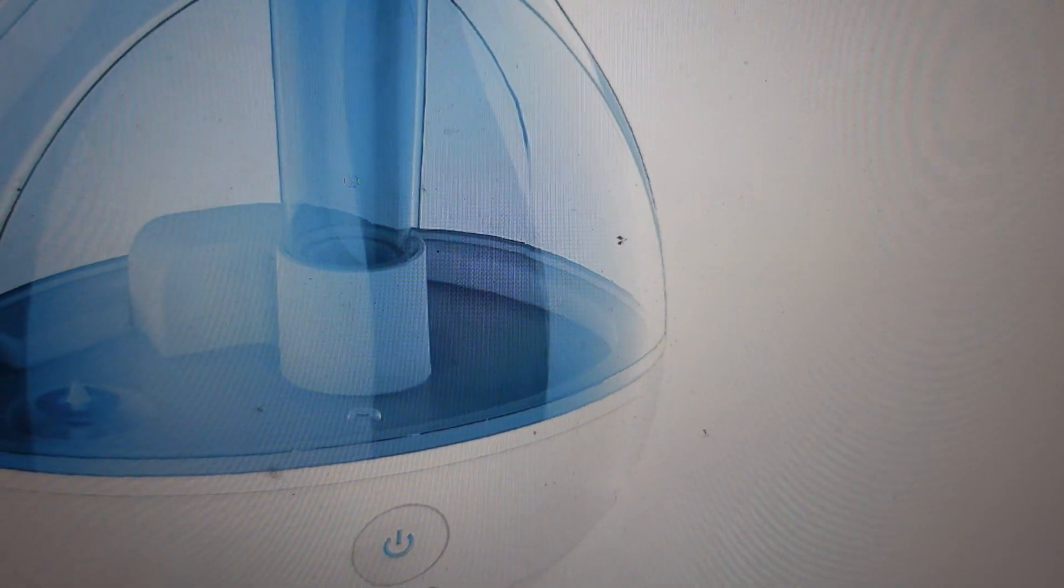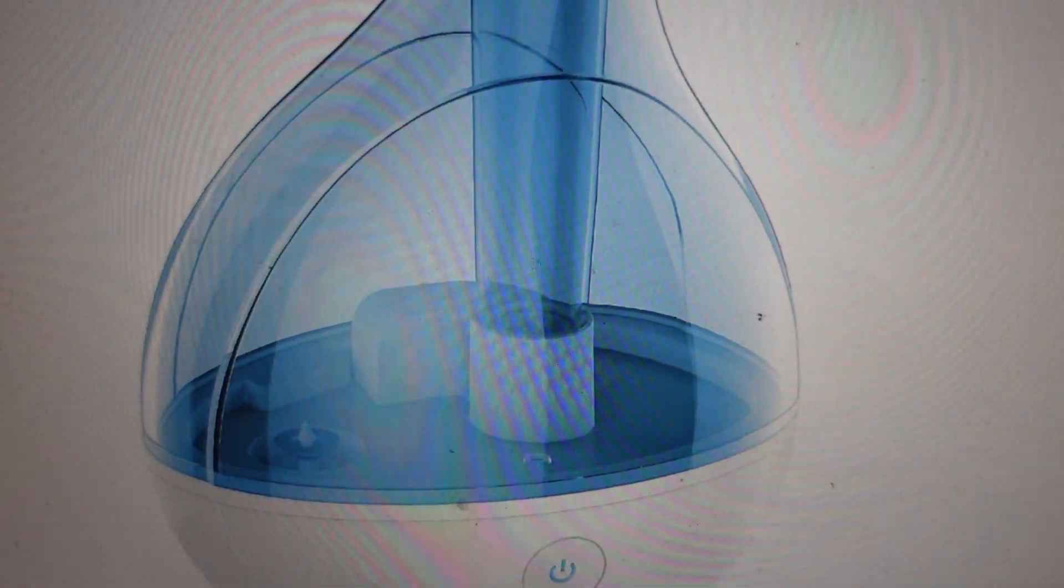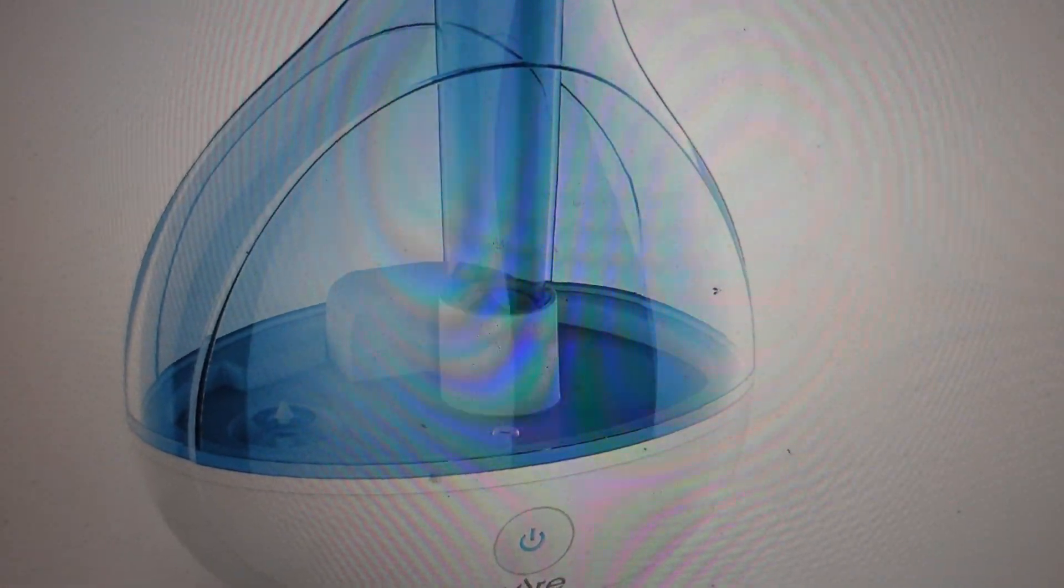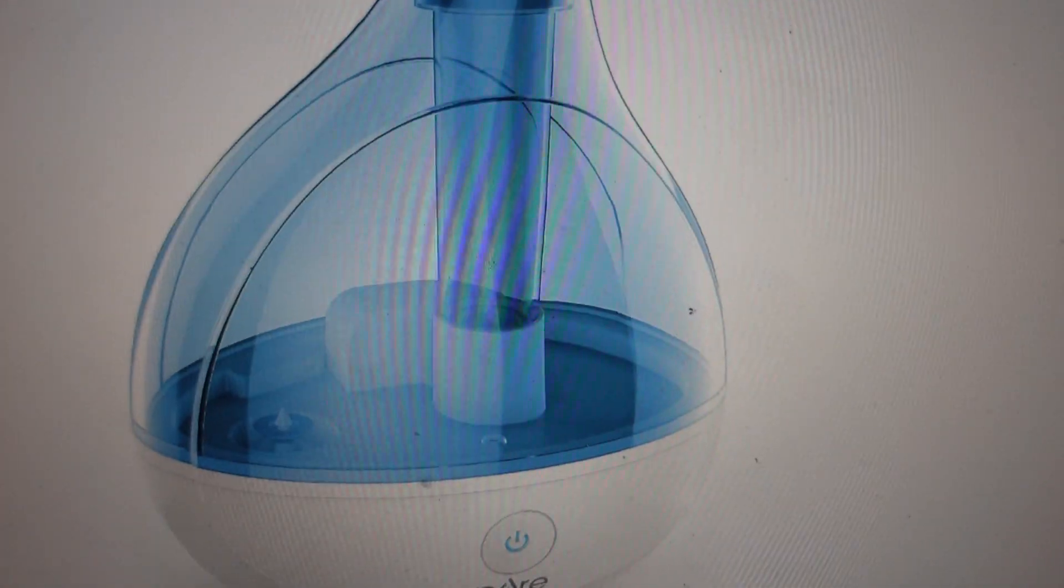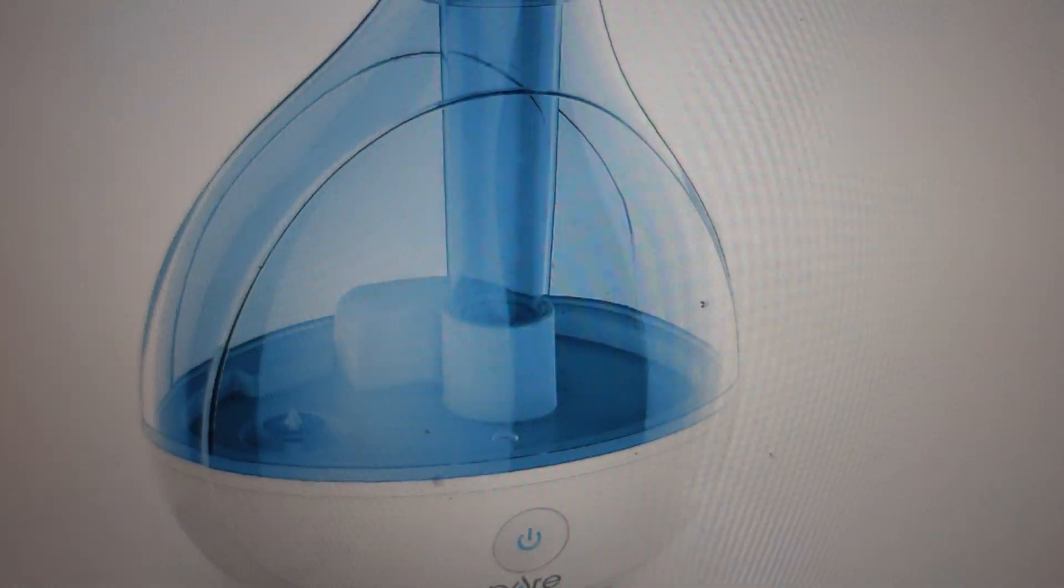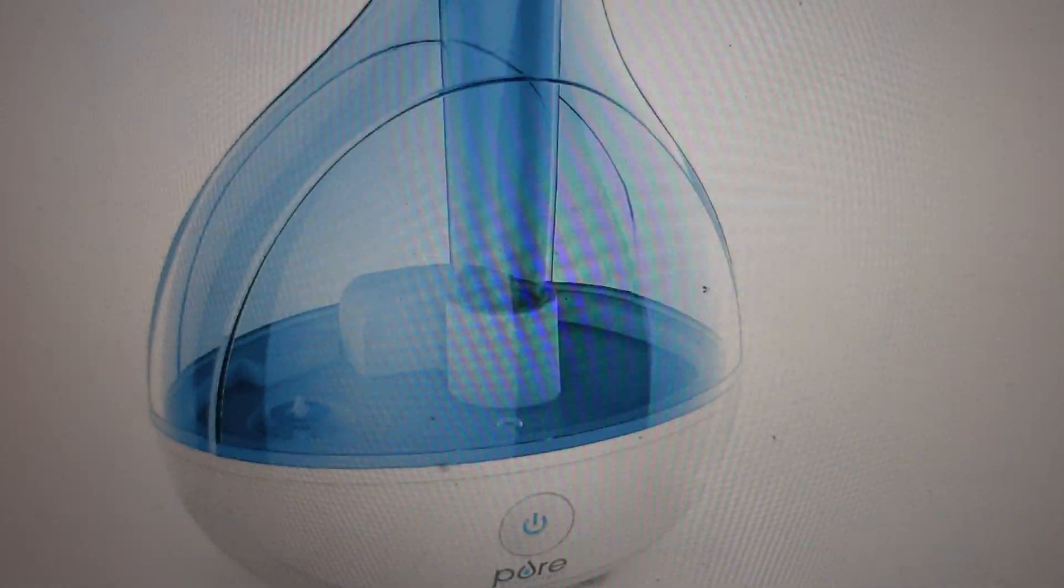This is a real simple thing with a real simple fix, which is kind of nice that the MistAir actually does this. Basically, the red light is a warning that the humidifier is low on water.